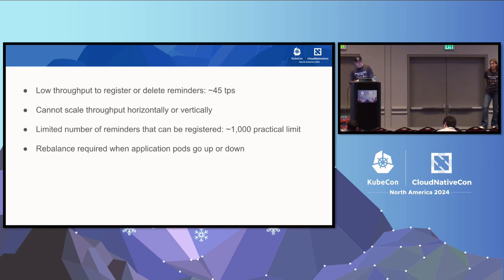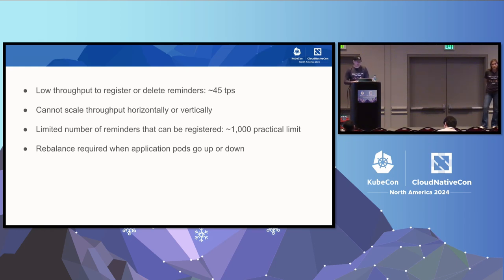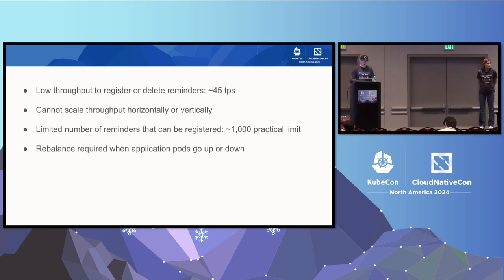But we still had really big limitations for actor reminders even after this. Really low throughput — you could only trigger reminders at a rate of about 45 TPS. That's really low for most production workloads, and you cannot scale horizontally or vertically. Adding more sidecars or more partitions does not help with TPS. We ended up hitting a practical limit of about 1,000 reminders, and rebalancing was required every time an application pod goes up and down.